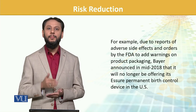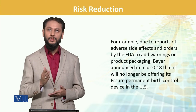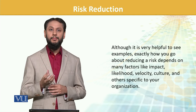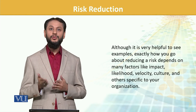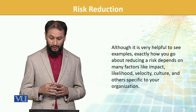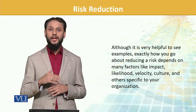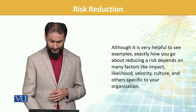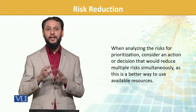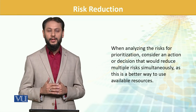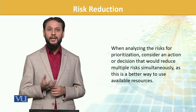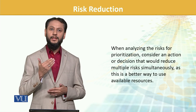A major pharmaceutical company announced in mid-2018 that it would no longer offer a particular product in the U.S. because its side effects were significant. The main factors to consider are: how much impact, how much chance, culture, velocity, speed, and the organization's overall structure, size, and norms. When analyzing risk prioritization, consider actions or decisions that would reduce multiple risks simultaneously — not a separate strategy for each risk. The strategy should be cost-effective, with minimum cost and maximum utilization of available resources.